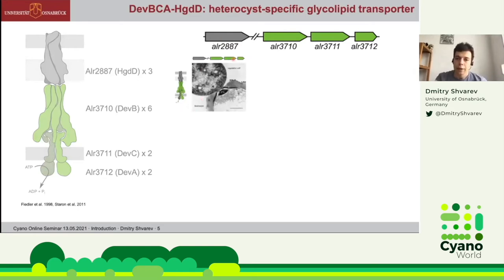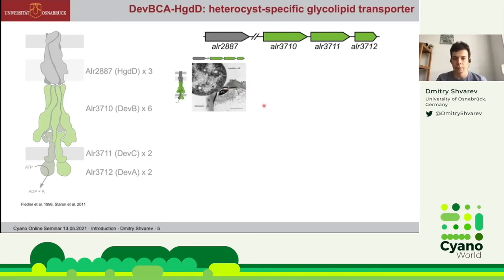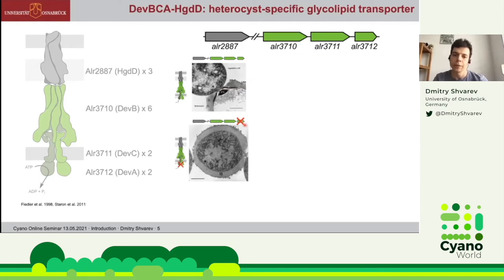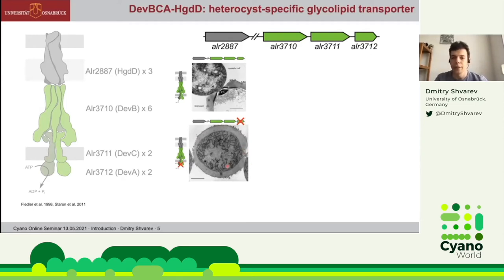In wild-type heterocysts, as seen in transmission electron micrographs of cross-sections, the heterocyst envelope is nicely formed with a polysaccharide layer — thick and grayish — and a thin, dense glycolipid layer. However, when one of the genes of this cluster is mutated, for instance DFA encoding the nucleotide-binding domain of the ABC transporter, the mutant heterocysts lack the glycolipid layer, while the polysaccharide layer remains. This indicates something is wrong in the export or formation of the glycolipid layer in the mutant.